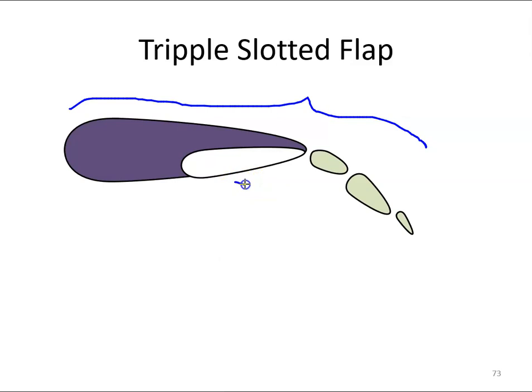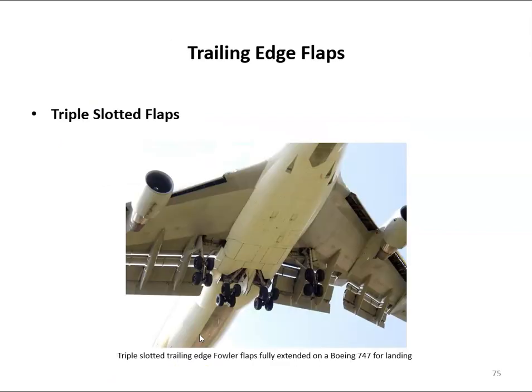We have the slots for high energy air to come through, delaying separation, and we have increased the chord length. The triple slotted flap generates the most amount of lift. Here is an example of the triple slotted flap on a Boeing 747.